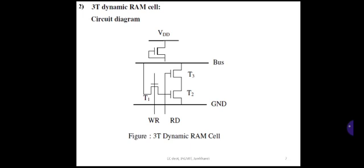When RD equals 0 and WR equals 0, the bit value is then stored for some time by the gate capacitance CG of transistor T2. During this time, the pull-up transistor P1 is off, and T2 is on if 1 is stored, while T3 remains off. Memory write operation requires RD equal to 0 and WR equal to 1, and whatever data is placed on the bus line is communicated to the gate capacitance of T2.